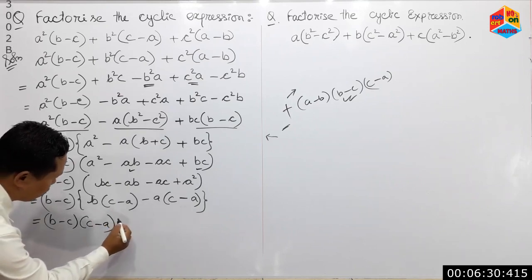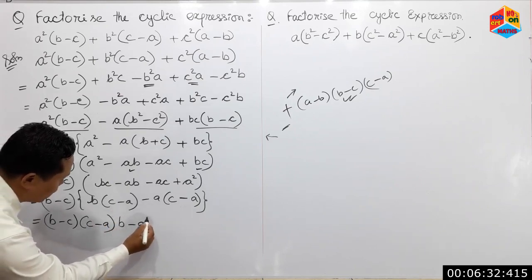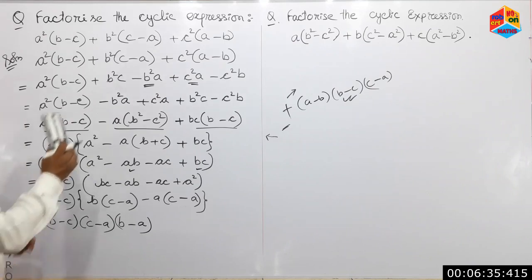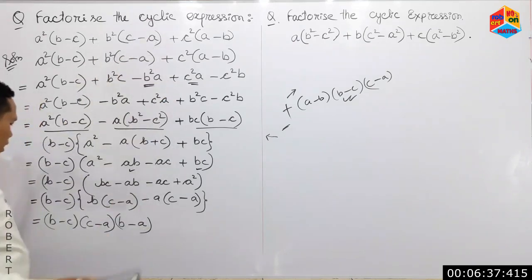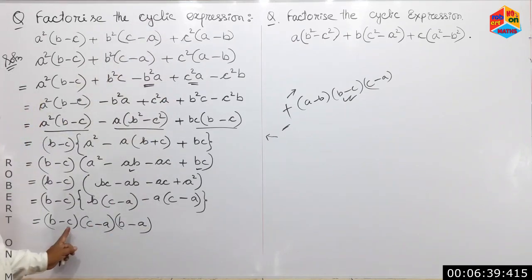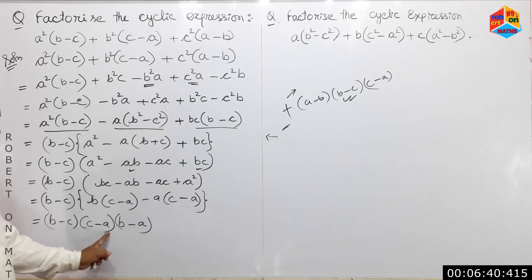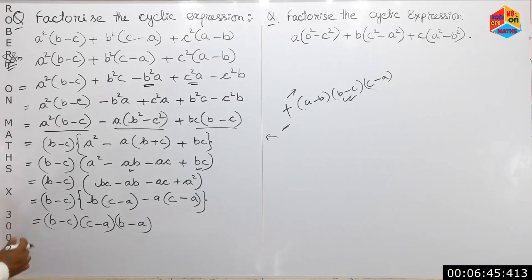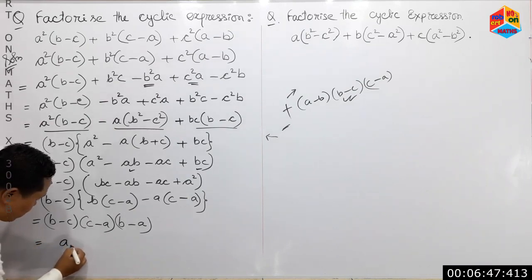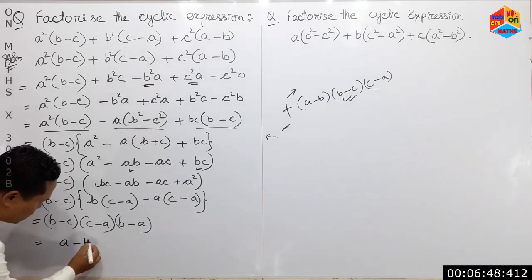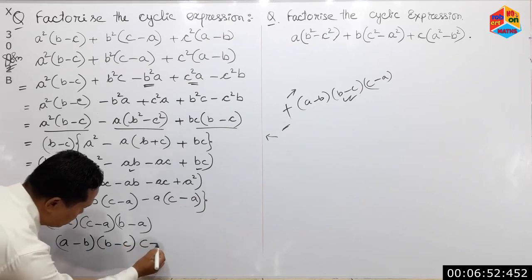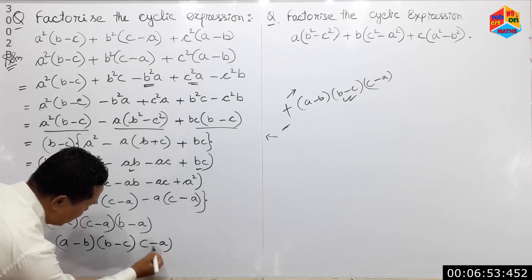So if we have to write the cyclic letters, we write a, b, c, c, a, a, b. We will write the pattern a, b, c, c, a, a, b again. So when we write the cyclic pattern: a, b, c, c, a, b.